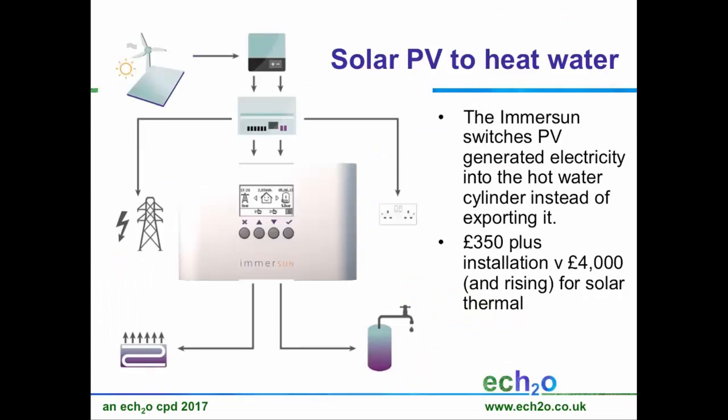You can also use solar PV to heat hot water. This is happening more and more on sites that are off the gas mains. You put PVs on the roof, and a lot of the time during the day your PVs aren't fully required — just a little bit needed for the fridge or freezer — so normally that electricity would be exported. What you can now do is switch it so it goes into a hot water cylinder. You're looking at £350 plus installation for the Immersun device, which sits between your inverter and your mains, versus £4,000 and up for solar thermal.